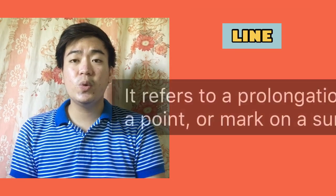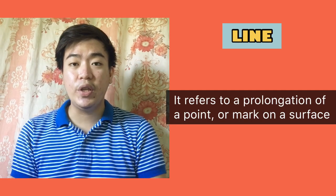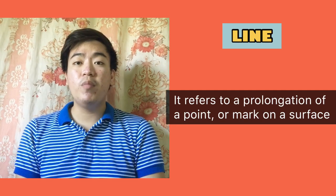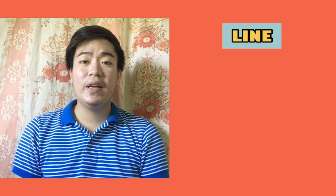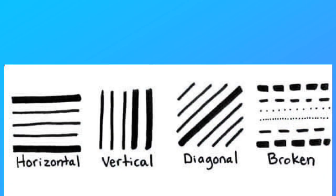Line refers to a prolongation of a point or a mark on a surface. We have different kinds of line: vertical, horizontal, diagonal, broken lines, zigzag, and more. Lines are also used to suggest dimensions and to guide visual movement.